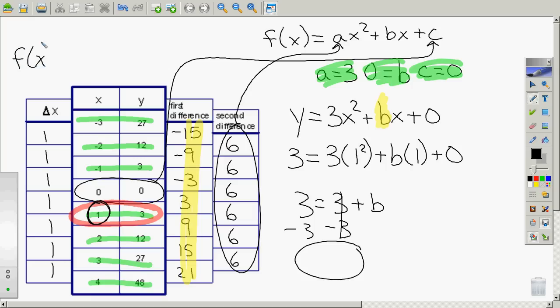So we'd write f of x equals, instead of a we'd say a is 3, 3x squared. Our b is 0, which is 0x, and our c is 0, 0 also. So there's the function that if you type that in, you'll get that table.